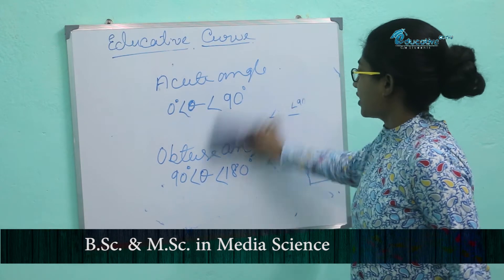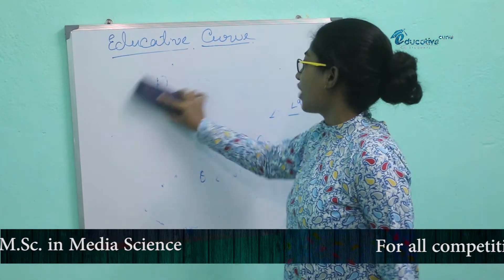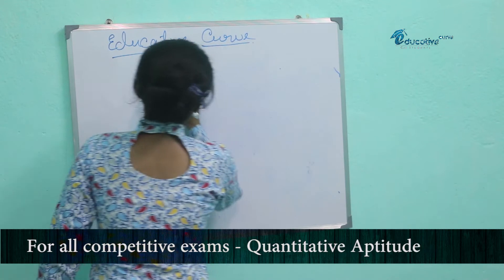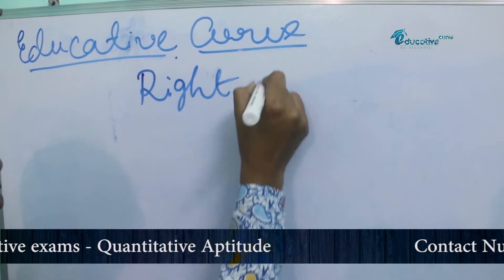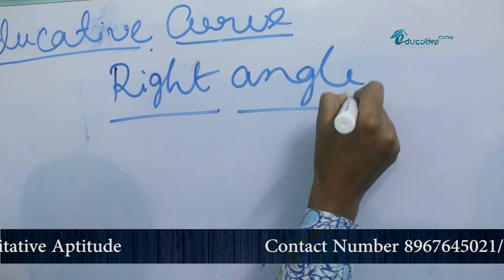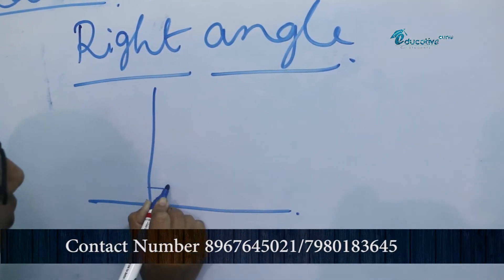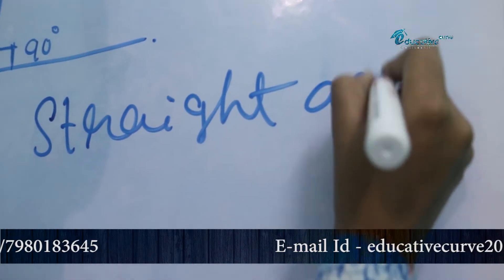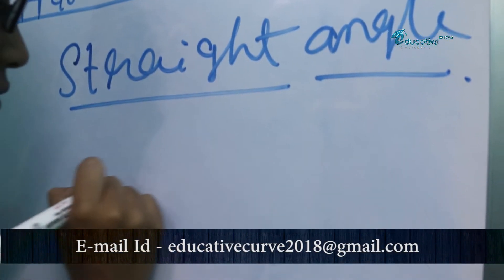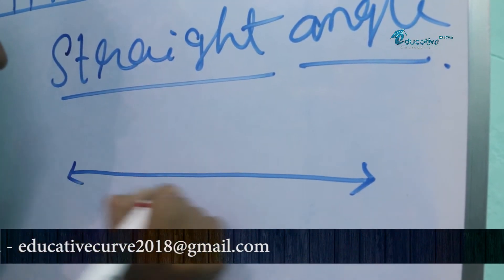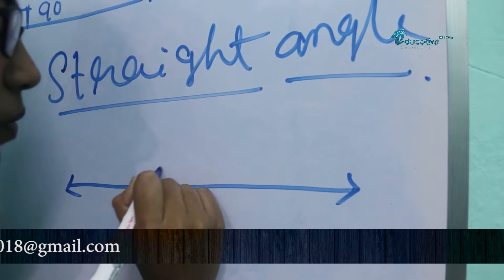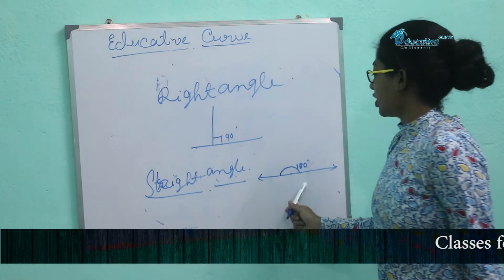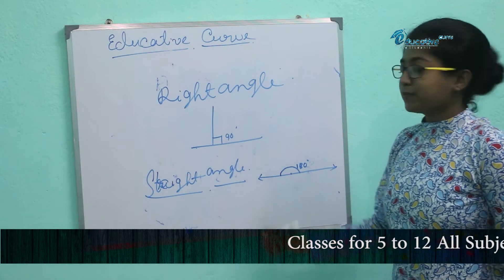Now we will discuss right angle and straight angle. The angle which is 90 degrees is called a right angle. The angle which is 180 degrees is called a straight angle. This is the straight angle and this is the right angle.